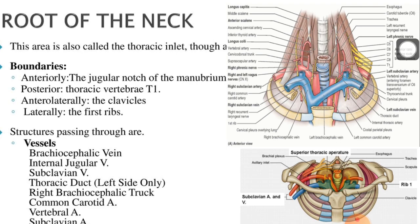The contents of the root of the neck include: the cupula of pleura, which extends up to two to three centimeters above the medial third of the clavicle; subclavian vein; thoracic duct and right lymphatic duct; subclavian artery; vagus nerve; and phrenic nerve. You need to learn these contents as this is an important short question. The vessels passing through the root of the neck are the brachiocephalic vein, internal jugular vein, subclavian vein, thoracic duct on the left side, right brachiocephalic trunk, common carotid artery, vertebral artery, and subclavian artery.